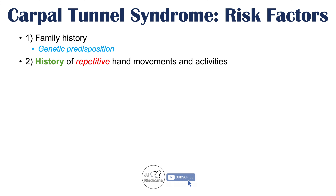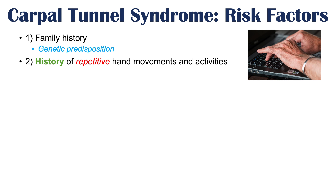A very important second risk factor is a history — oftentimes a long history — of repetitive hand movements and activities. One example might be typing on a keyboard. Individuals with long histories of repetitive hand movements, whether typing, cleaning, or other activities using their hands repetitively, are at increased risk for carpal tunnel syndrome.